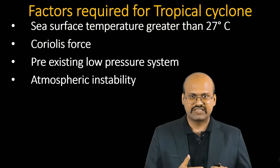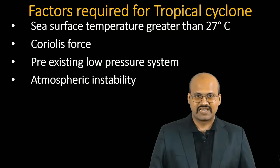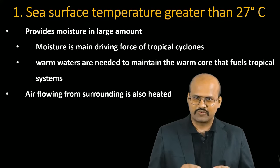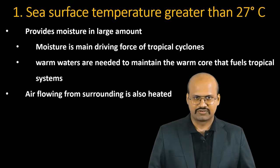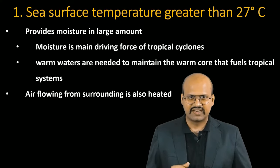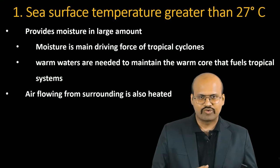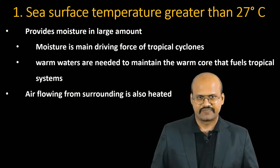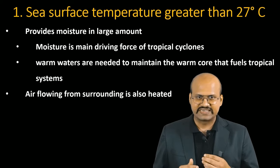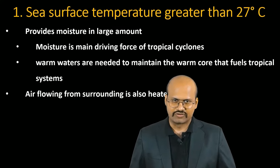The first important factor is that sea surface temperature should be more than 27 degrees Celsius. A warm sea provides a lot of moisture to the cyclone, which is essential for maintaining the core. Secondly, the warm sea heats the incoming air so it can carry more moisture into the cyclone. So the sea surface temperature both provides moisture and heats the incoming air.